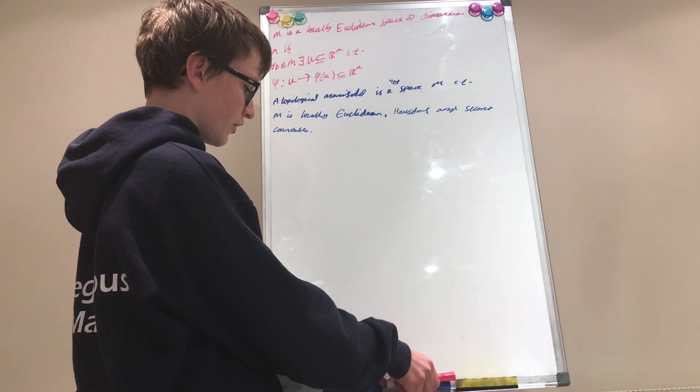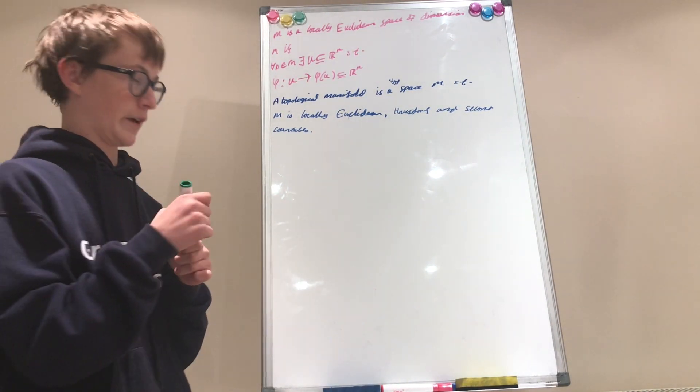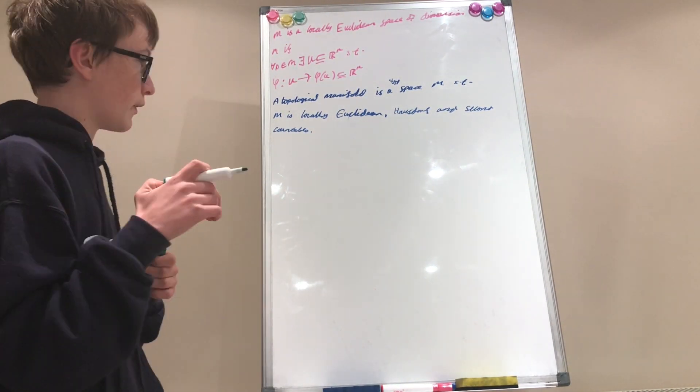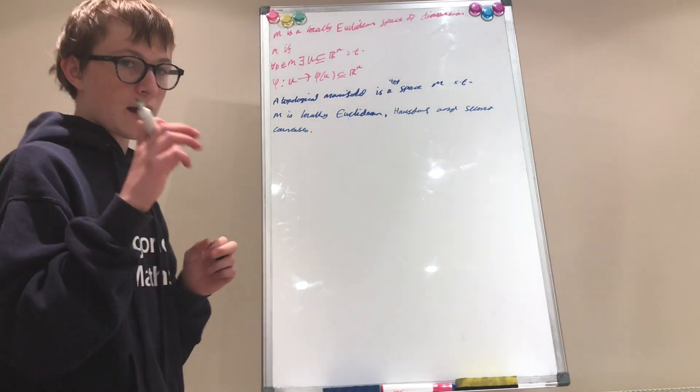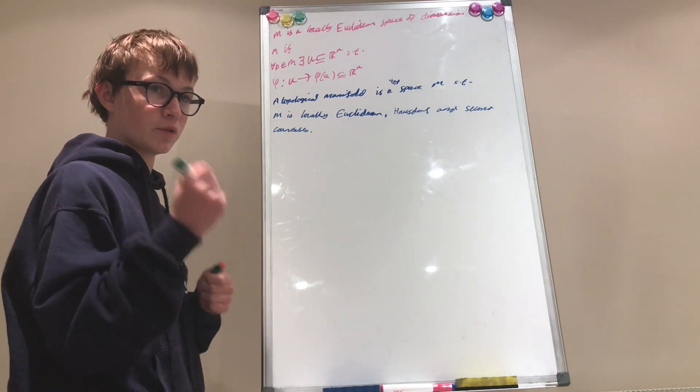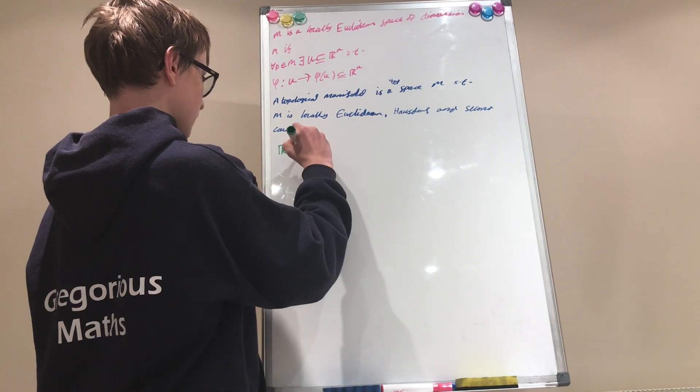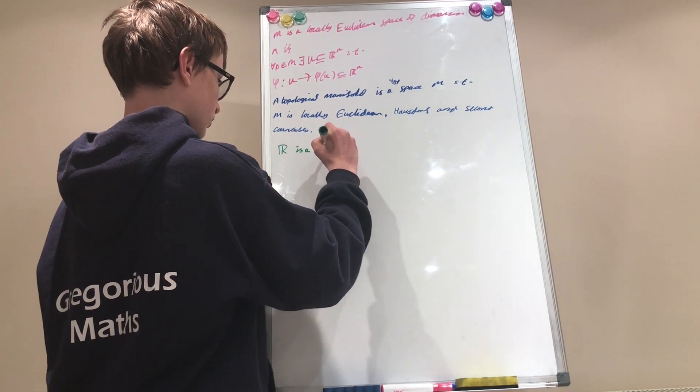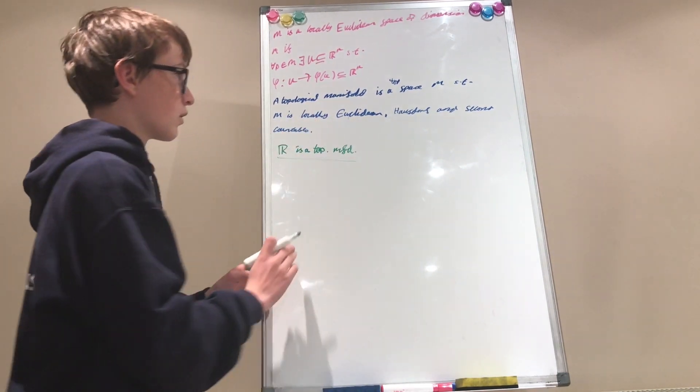Now, before I introduce any more terminology, which I will, by the way, I'm just going to give one quick example. And this one is a very, very well known example. Okay. So the real line is a topological manifold, right?